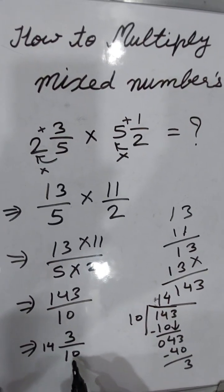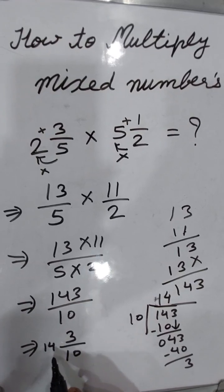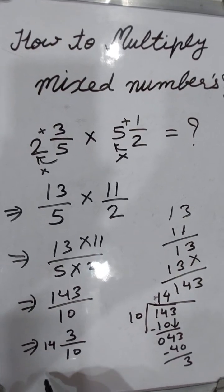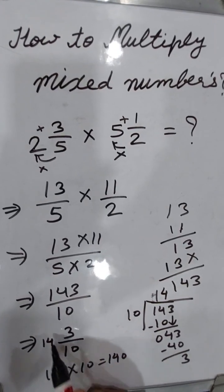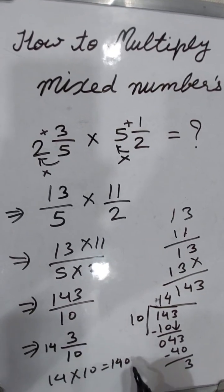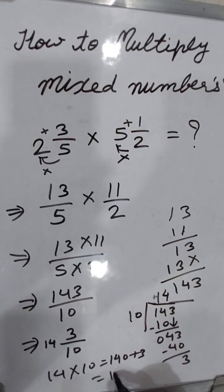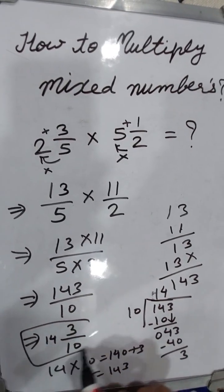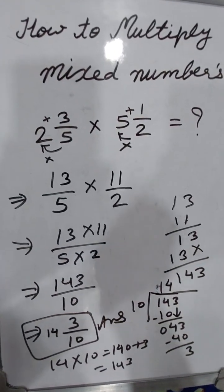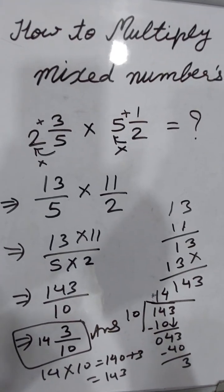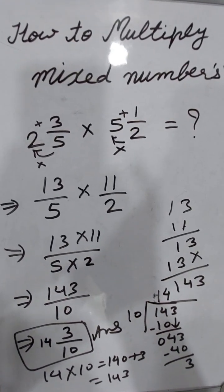To verify: 10 times 14 equals 140, plus 3 equals 143. This is the answer: 14 3/10. Thanks for watching! Please like, share, and subscribe to my channel for more videos.